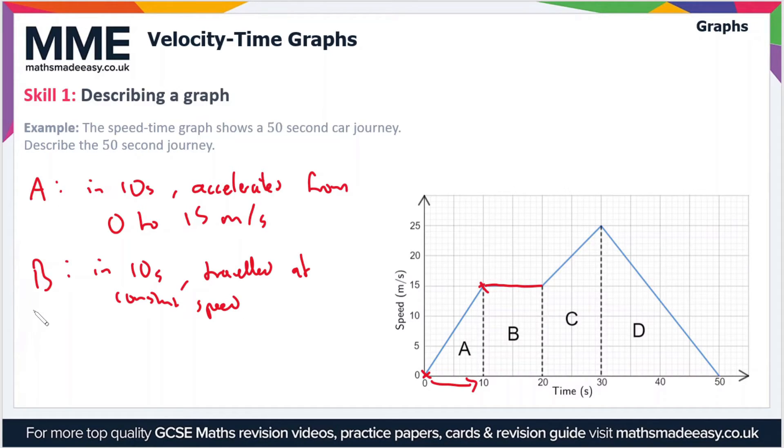Moving on to part C of the graph, section C, we can see that again it's a time span of 10 seconds. But this time we've gone from a speed of 15 meters per second to 25 meters per second, so we've accelerated from 15 to 25 meters per second.